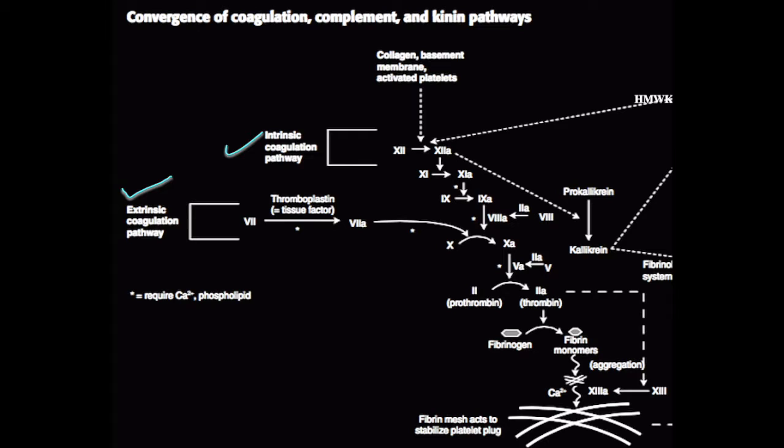The intrinsic pathway starts with factor 12. When factor 12 is exposed to a variety of substances such as collagen, the basement membrane, activated platelets, or HMWK, which stands for High Molecular Weight Kininogen, it's transformed into 12a. 12a then converts 11 into 11a, which converts 9 into 9a. Factor 9a then uses factor 8a as a cofactor to turn 10 into 10a.